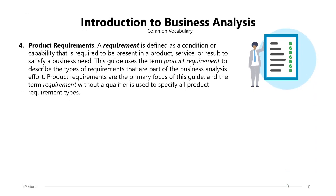The fourth term is product requirements, which is a very important term for the business analysis discipline, as all efforts and activities conducted while performing business analysis will be around product requirements. A requirement can be defined as a condition or capability required to be present in a product, service, or result to satisfy a business need. The PMI PBA guide uses the term product requirement to describe the types of requirements that are part of the business analysis effort.